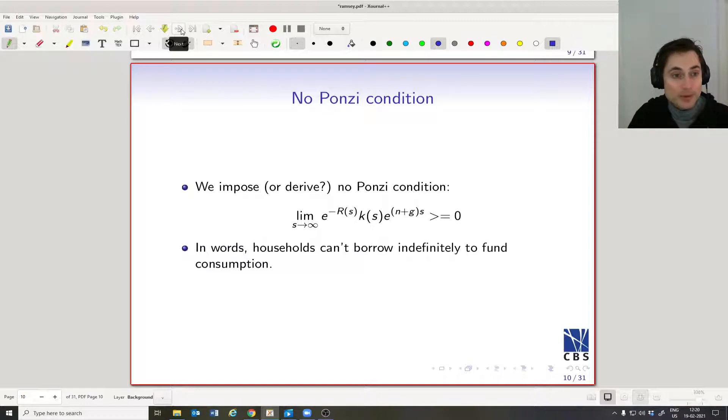They can just keep doing that indefinitely with their debt level increasing exponentially forever. There's nothing to stop households from doing that yet, so we have to impose this condition called the No Ponzi condition. The idea is you can't just keep borrowing to pay off your debt forever.